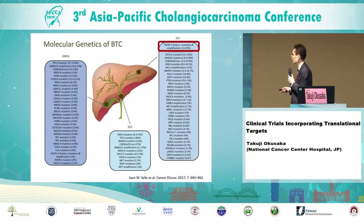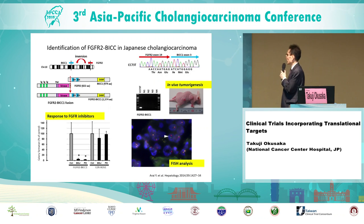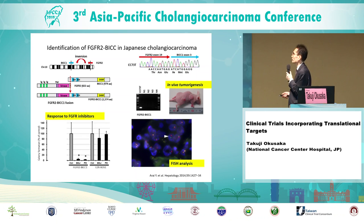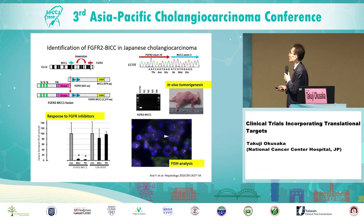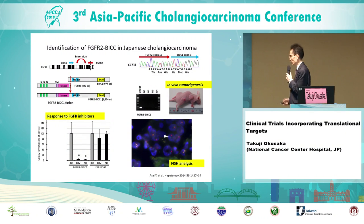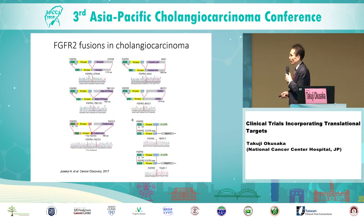Next, I'd like to talk about the clinical trial for FGFR2 fusion mutation. In 2014, several basic researchers, including Professor Shibata and colleagues from our institute, reported FGFR2 fusion mutation in intrahepatic cholangiocarcinoma. Professor Shibata showed in vivo tumor tumorigenesis in animal models and also demonstrated response to several FGFR inhibitors in such tumors. Since then, several other fusion mutations in intrahepatic cholangiocarcinoma have been demonstrated.